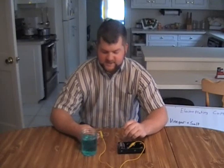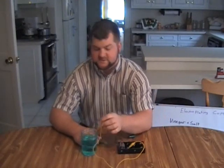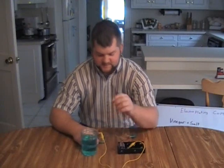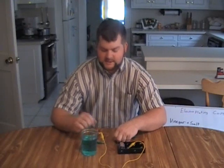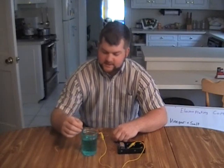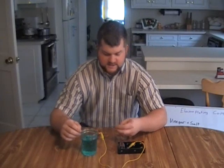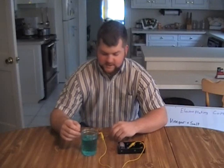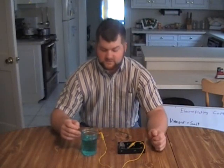Here we have electroplating. We can take a nickel and plate it with copper. Start with a piece of scrap copper wire. Vinegar solution. It's turning blue because of the copper ions. And we put the nickel in it. Takes about 30 minutes. And you have a copper plated nickel. So how does all this work?